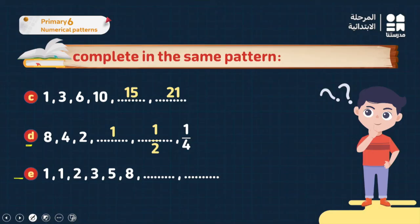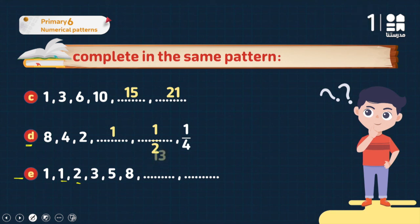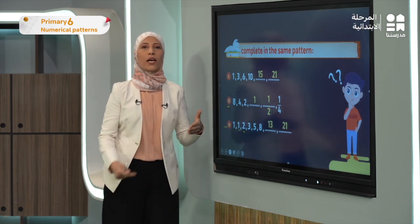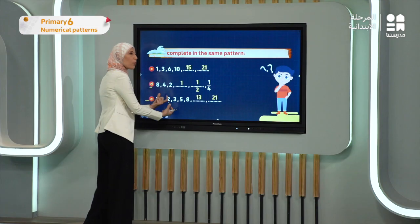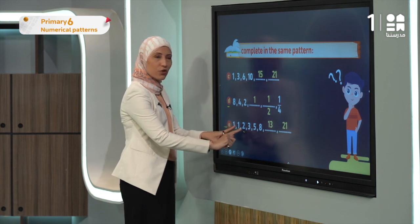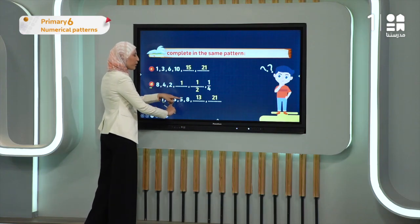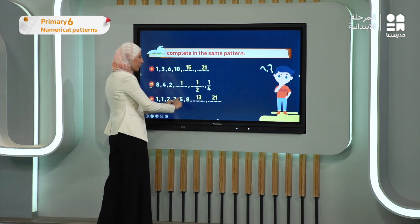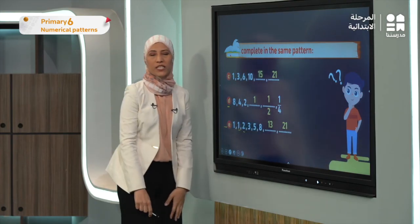The next important exercise has: 1, 1, 2, 3, 5, 8. Focus: 1 plus 1 gives 2; 1 plus 2 gives 3; 2 plus 3 gives 5; 3 plus 5 gives 8. So 5 plus 8 gives 13; 8 plus 13 gives 21. The rule is: add the current number and the previous number to find the next number. This is the Fibonacci sequence.